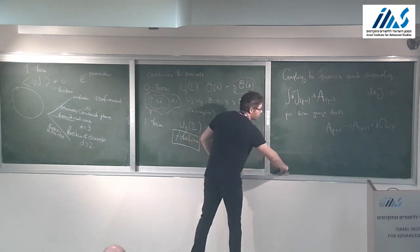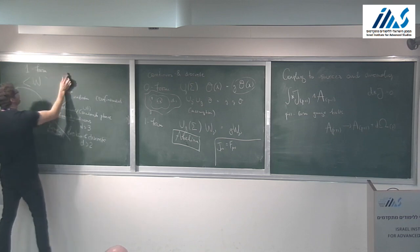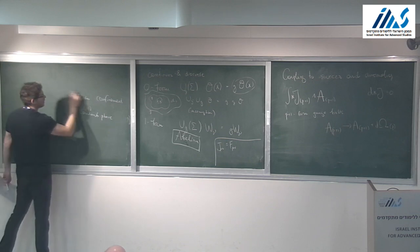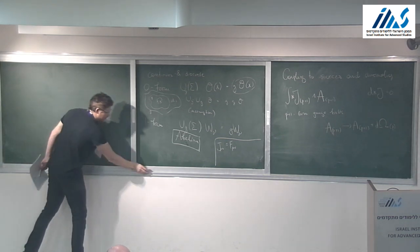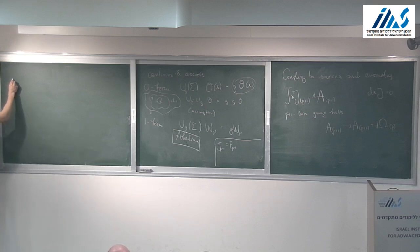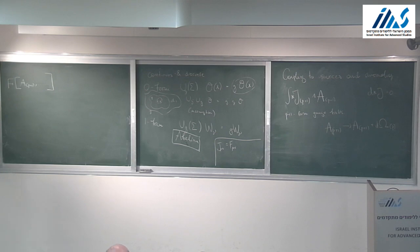Once we couple all our symmetries — zero-form, one-form, etc. — to such background fields, we are allowed to study the partition function of the theory as a function of all those sources. This is analogous to studying the free energy as a function of a source μ. We can study the free energy as a function of all the gauge fields in the system — it's a well-defined function of all the sources.